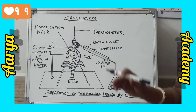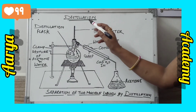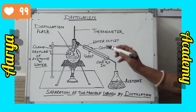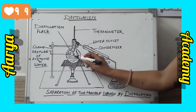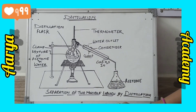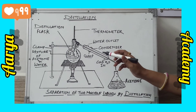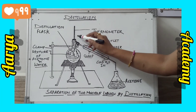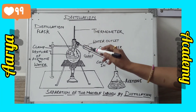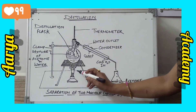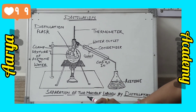Now let us explain the activity based on the distillation process to separate a mixture of two miscible liquids — acetone and water. Take the mixture and place it in a distillation flask. Fit the flask with a thermometer. Then heat the mixture slowly using a burner, keeping a close watch on the thermometer reading.